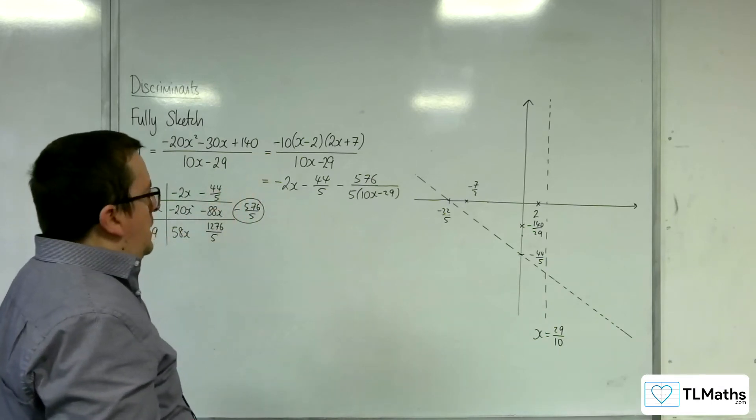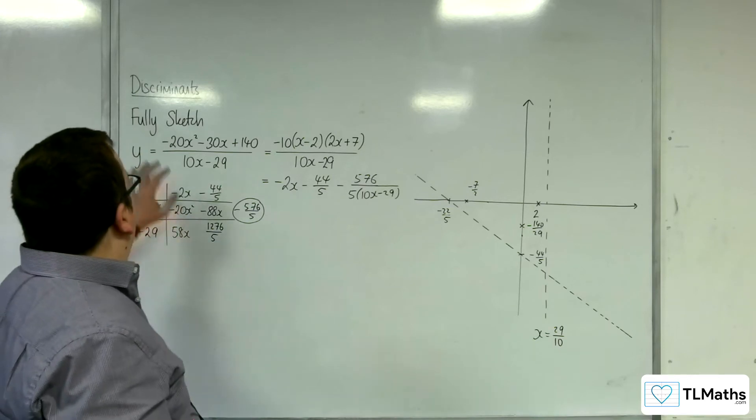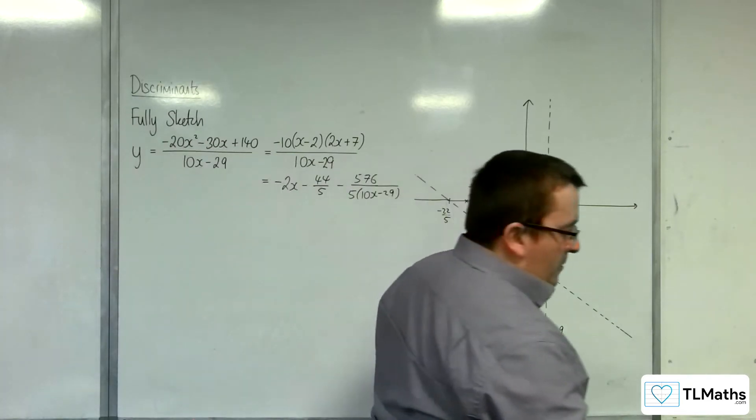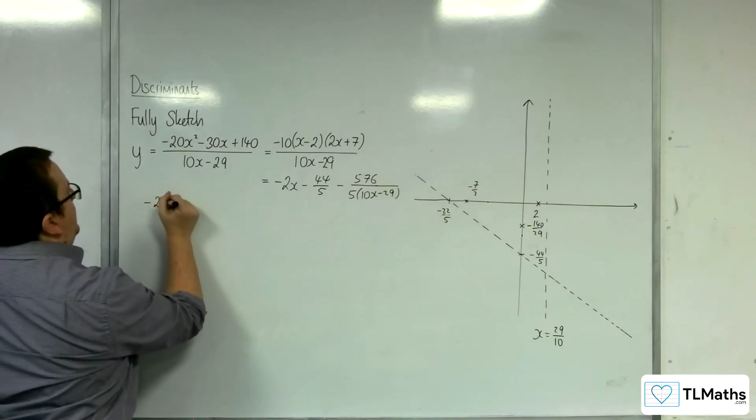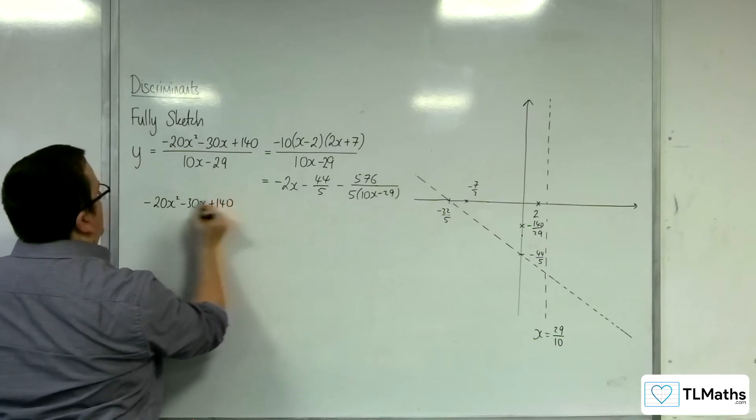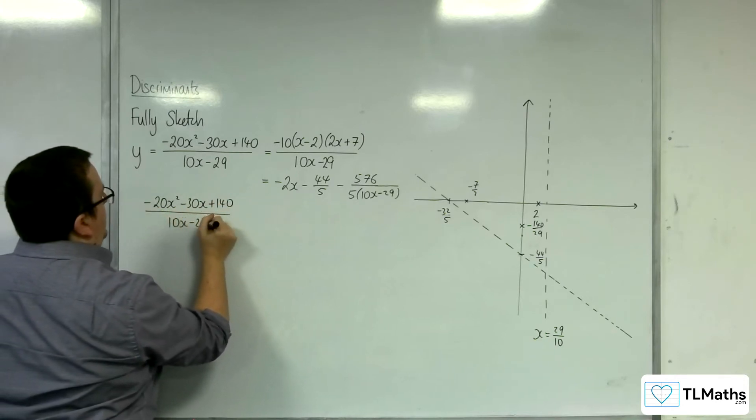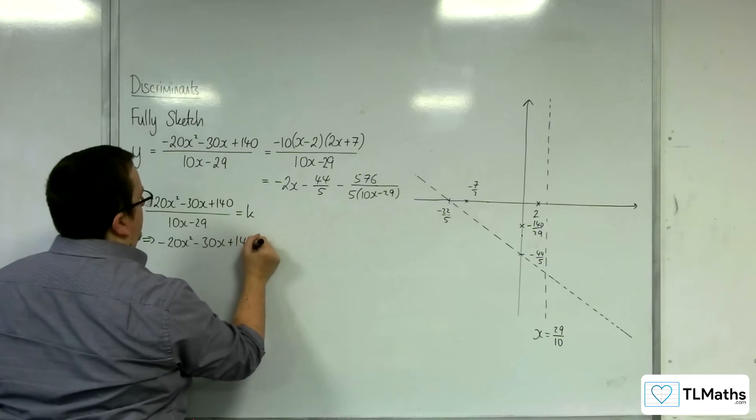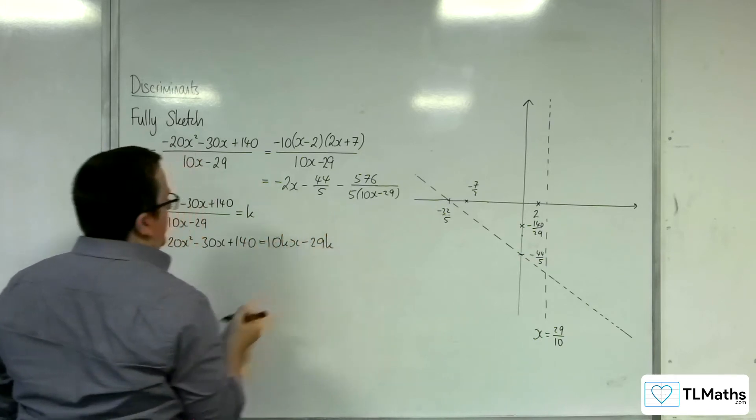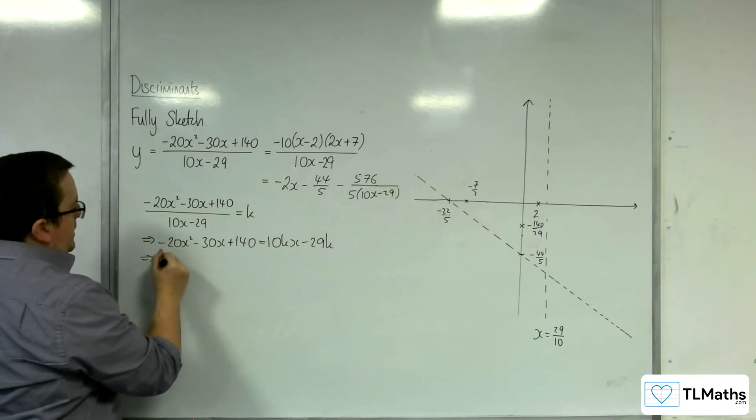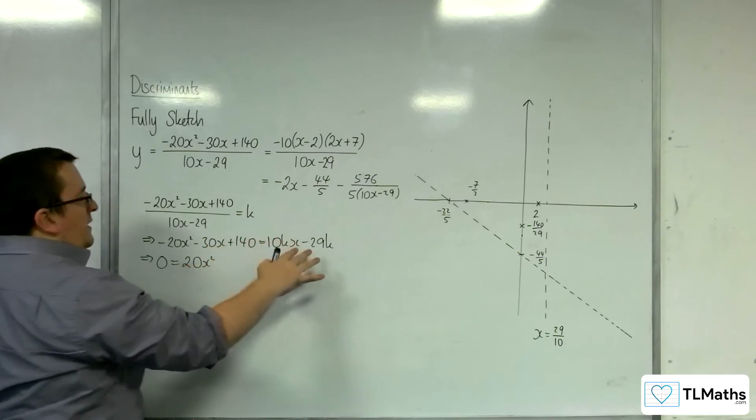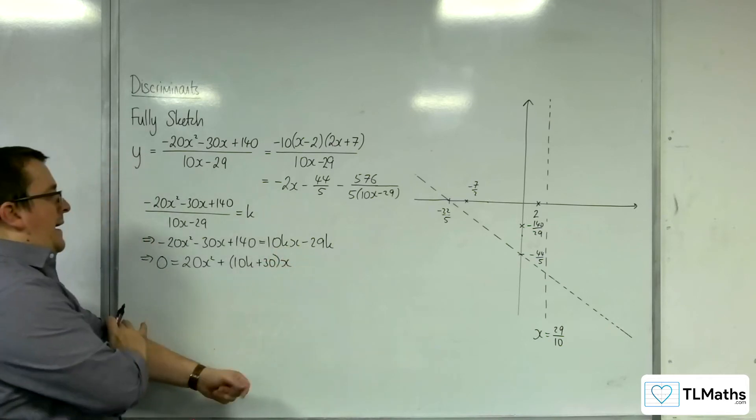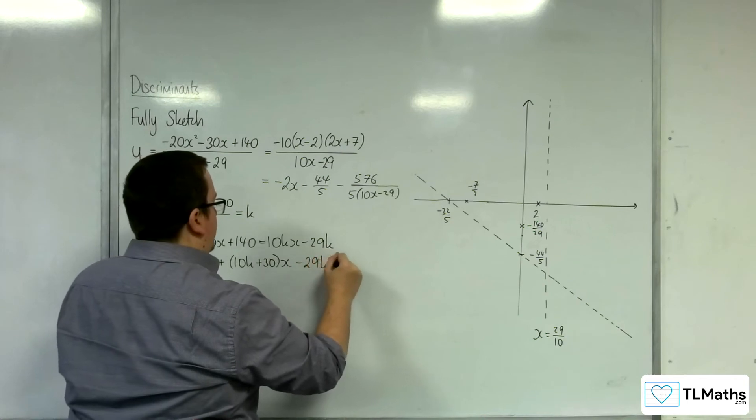Now, stationary points. I'm going to put this equal to K. I'm just going to get rid of that bit now. Minus 20x squared take away 30x plus 140 over 10x take away 29 is equal to K. So, minus 20x squared take away 30x plus 140 is going to be equal to 10kx take away 29k. I'm going to move everything on to the right-hand side. So, 0 equals 20x squared, plus 10k plus 30 times X, and minus 29k take away 140.